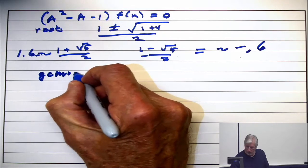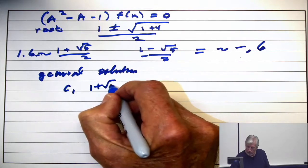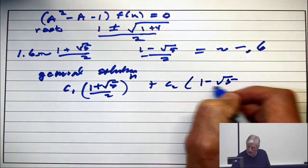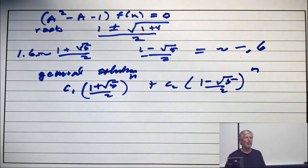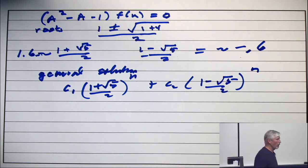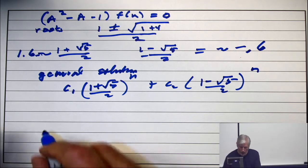The general solution is C1 times 1 plus square root of 5 over 2 to the n, plus C2 times 1 minus square root of 5 over 2 to the n. So the Fibonacci sequence satisfies that. Now, you're supposed to, at this point, say, wait a minute. The Fibonacci sequence is integers. This has got radicals. There are no radicals in the Fibonacci sequence. You start multiplying the square root of 5 to the n. What it's going to turn out is that the values of C1 and C2 are, in some sense, conjugate, and the radicals disappear.